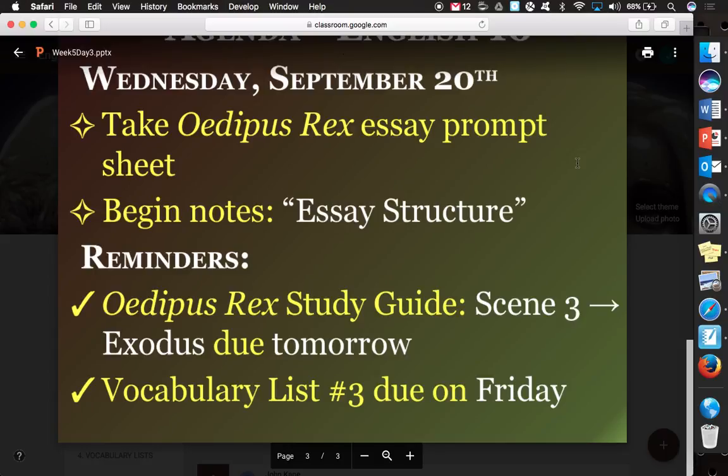Don't get confused as to this essay assignment with what our prior obligations already are. Keep in mind, tomorrow, Thursday, this is Wednesday, tomorrow, Thursday, is when I'm collecting the study guide from you for Oedipus that you were working on in class yesterday. So it was scene three, four, Exodus. Remember, that was questions 23 to 41. All told, when those get added up, it's a 22-point study guide, so that's a fairly significant assignment. So please make sure you take your study guide home.